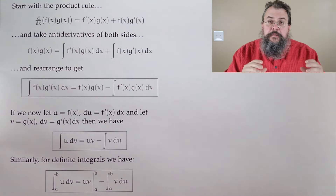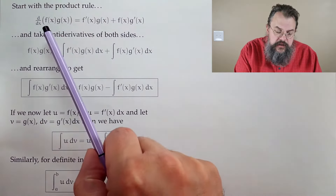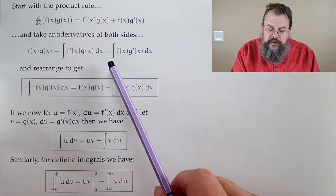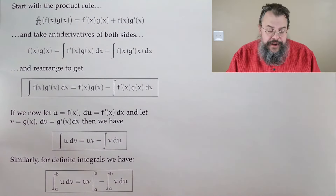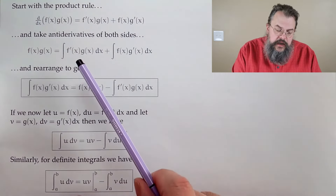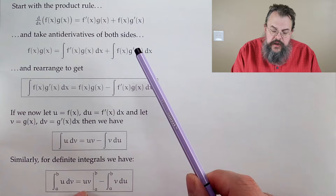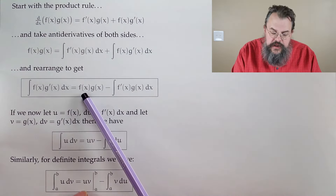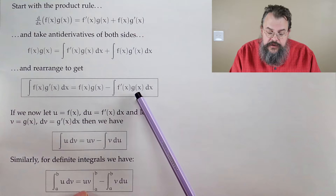Now take the antiderivative of both sides. We come to the conclusion that f(x)g(x) — the antiderivative of the derivative — equals the antiderivative of f′ times g, plus the antiderivative of fg′. Constants work themselves out. So we get the integral of fg′ equals f(x)g(x) minus the integral of f′(x)g(x).